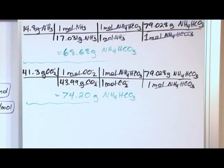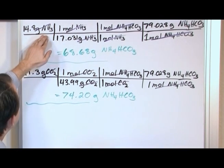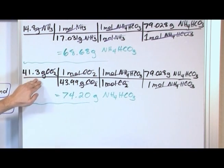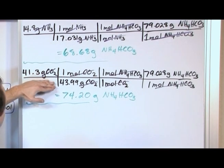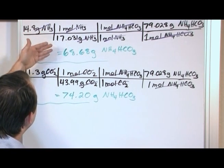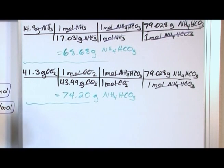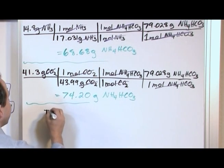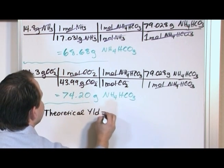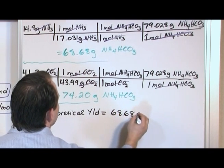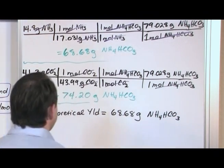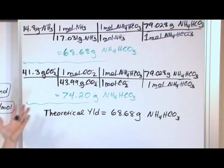So what did we learn? Under one assumption we'd produce 68.68 grams, under the other we'd produce 74.20 grams. Obviously both can't be true. The reaction will actually stop first when we consume all our NH3, so the theoretical yield is equal to 68.68 grams of NH4HCO3. After that, the reaction stops and the excess CO2 just floats around doing nothing.